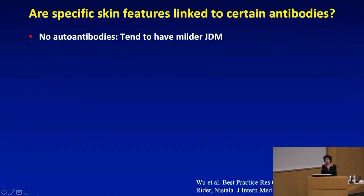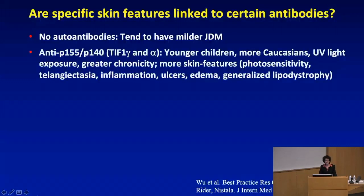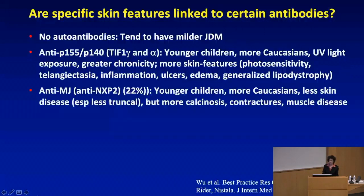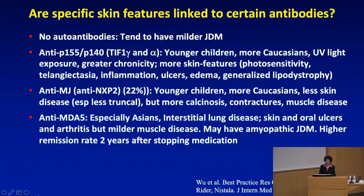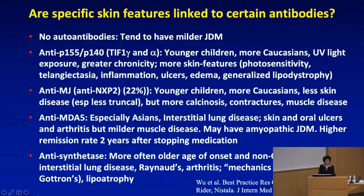Regarding antibody associations with skin disease: no autoantibodies tends to mean milder disease. Anti-TIF-1 gamma patients tend to have more UV light exposure, greater chronicity, more skin features, and has been linked to photosensitivity, telangiectasia, inflammation, ulcers, edema, and generalized lipodystrophy. Anti-NXP2 shows less skin disease — especially less truncal skin disease — but more calcinosis. Anti-MDA5 is associated with oral and skin ulcerations but milder muscle disease, can present amyopathic, and is a big marker for interstitial lung disease. Antisynthetase in children has been linked to mechanic's hands and lipoatrophy.